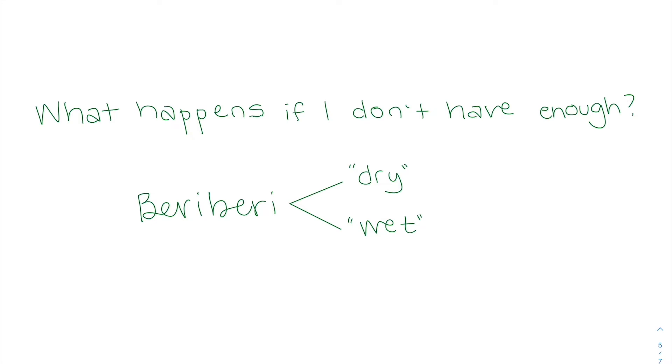But I also want to point out that beriberi has two different kind of types. So I mentioned that it affects the nervous system and the cardiovascular system. It's labeled as dry when it affects the nervous system. So there is muscle wasting because of damaged nerves. And then it's kind of a wet beriberi. If it's affecting the cardiovascular system, we often see edema. There's peripheral vasodilation. So our blood vessels are getting bigger. Our heart has to pump harder in order to pump the blood, resulting in that edema that I mentioned.